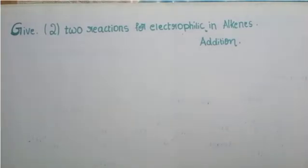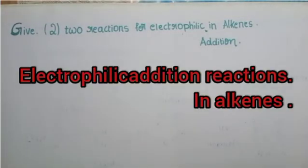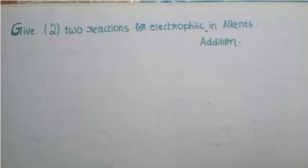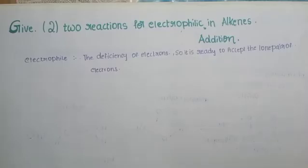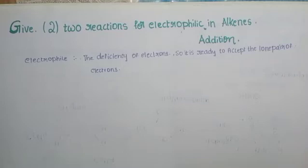Hi everyone, welcome back to my channel. Please subscribe to my channel 'Law Pharmacy'. So now the question is: give two reactions for electrophilic addition in alkenes. First we should know what is an electrophile. An electrophile is nothing but the electron-loving group. It's called electron-loving because it has a deficiency of electrons, so it accepts lone pairs of electrons.